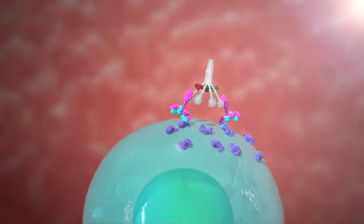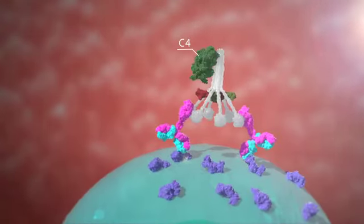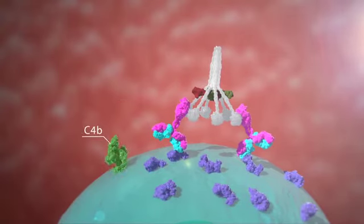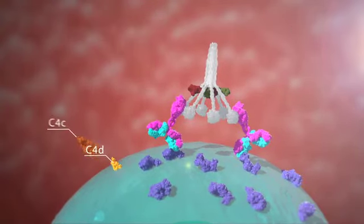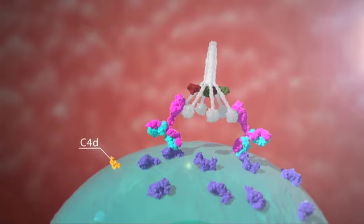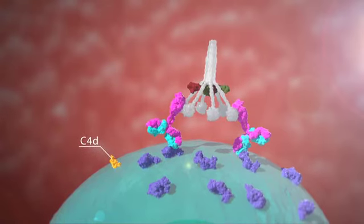When bound to a host cell, like this B cell, an important protective reaction occurs, creating IC4B. This terminal action sheds off C4C, sparing the cell and leaving C4D attached for the remainder of the cell's life through a covalent bond.